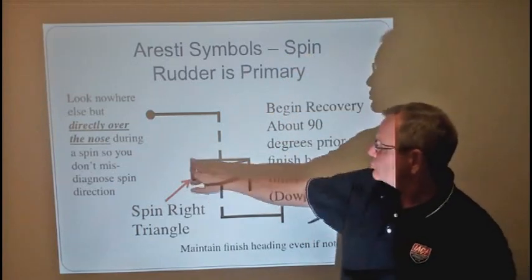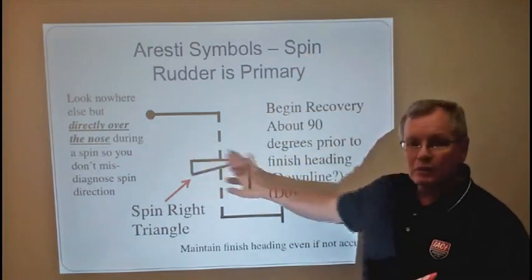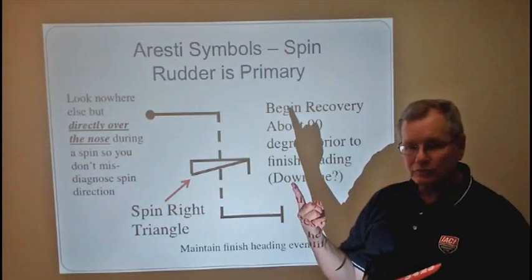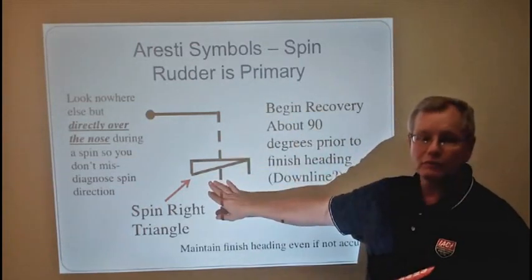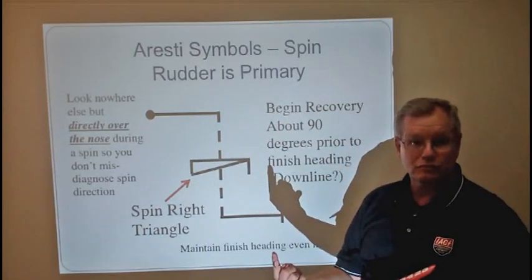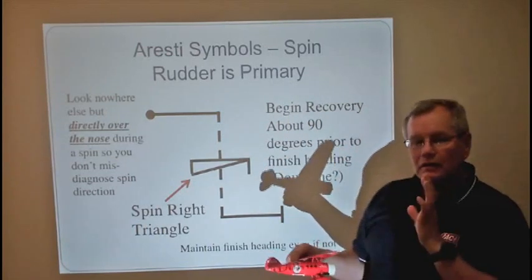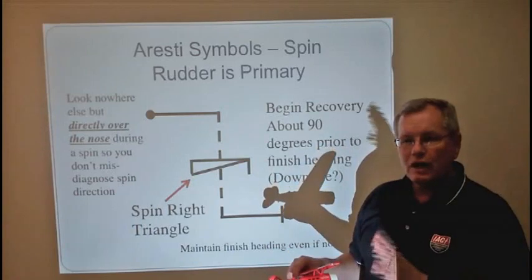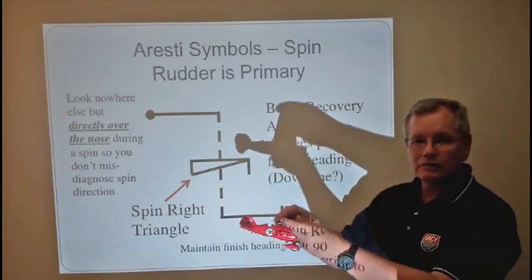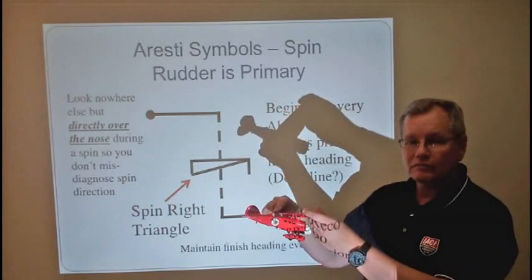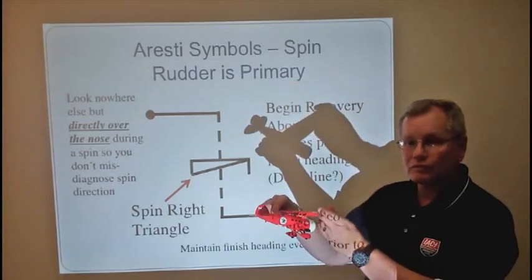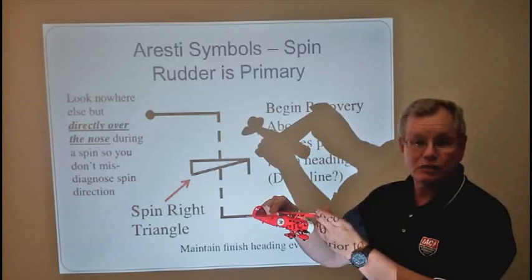We can see that in this right triangle, it's equally on both sides of the line, so it's 360 degrees of rotation. If you had two of these in a row, it would be a double rotation — a two-turn spin. You need to stop on a heading, and you'll be judged for every five degrees off that you finish from that particular entry heading.